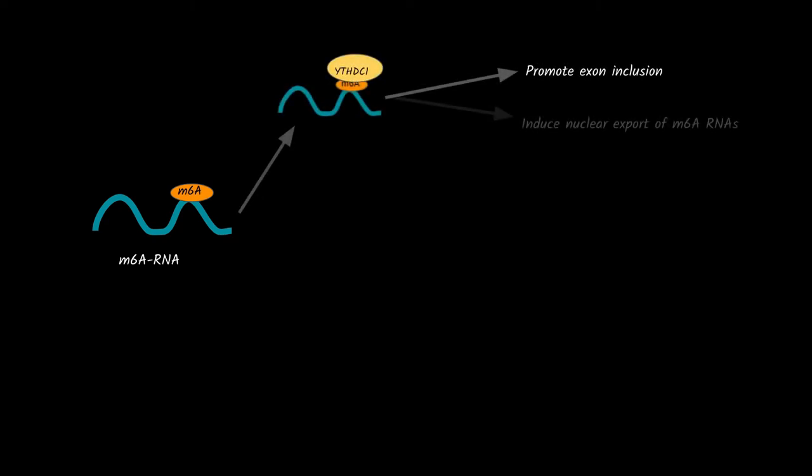YTHDC1 promotes exon inclusion by modulating splicing factors and also promotes the nuclear export of M6A methylated RNAs. YTHDC2 improves the translation efficiency.